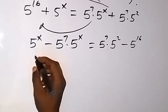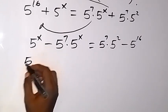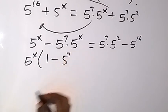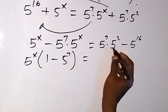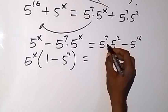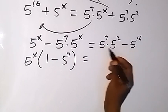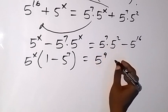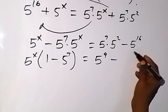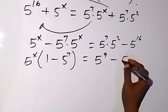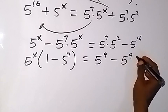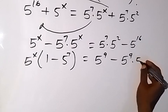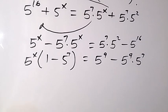We factor out 5 raised to power x as a common factor, leaving bracket 1 minus 5 raised to power 7. On the right side, by the law of indices — when the base is the same and terms are multiplied we add the powers — we get 5 raised to power 9, and we can also write 5 raised to power 16 as 5 raised to power 9 times 5 raised to power 7.